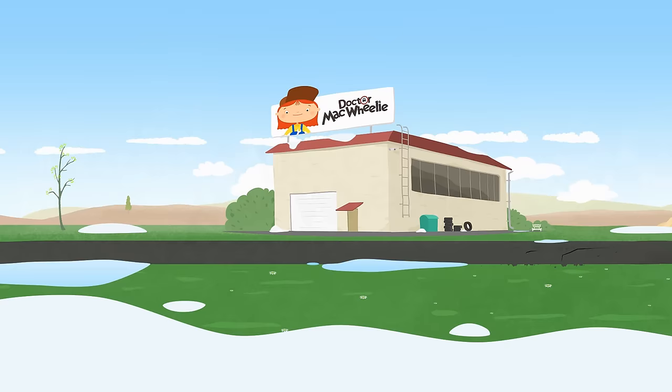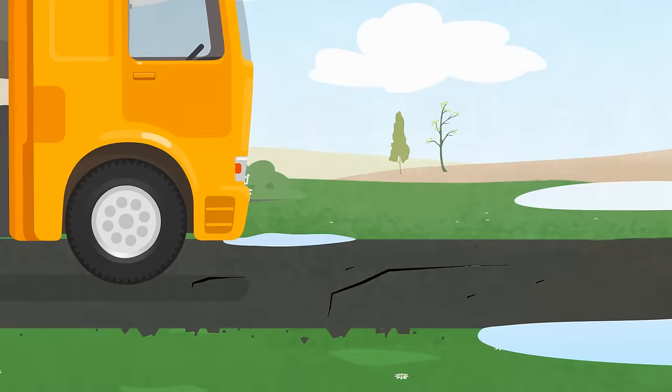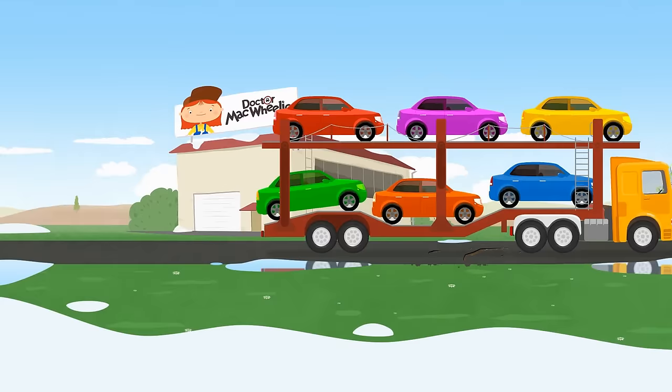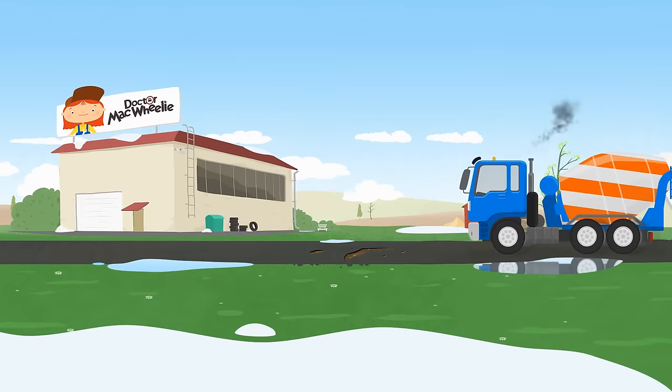There are many vehicles on the road. This is a big car carrier. When such a heavy car drives on the asphalt, it can break.